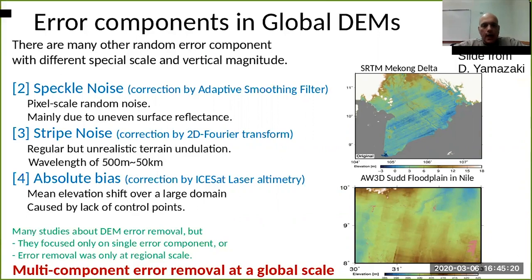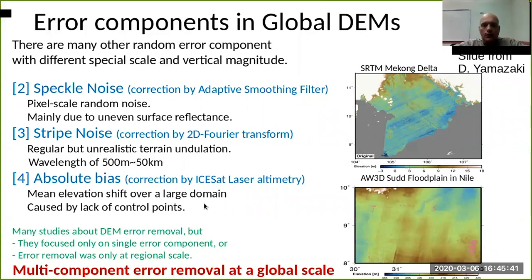There can also be the presence of stripes, for example over here on the right side, or you can have even absolute bias or error in the elevation. All these kinds of errors they can be corrected.